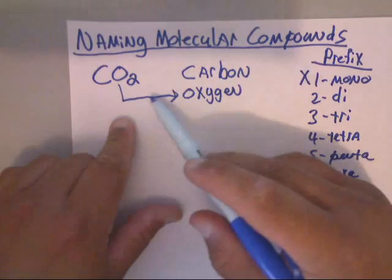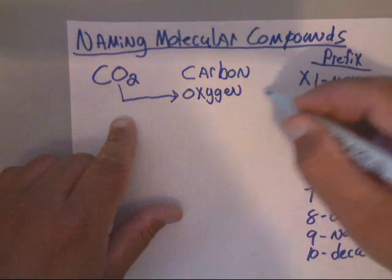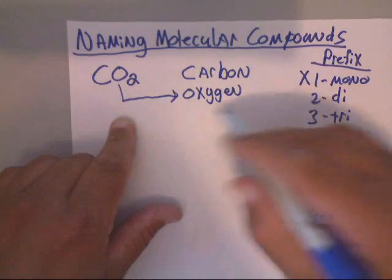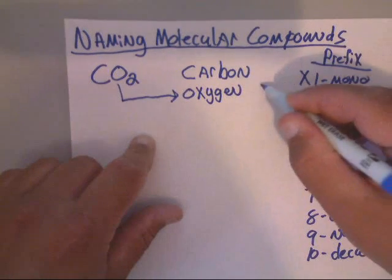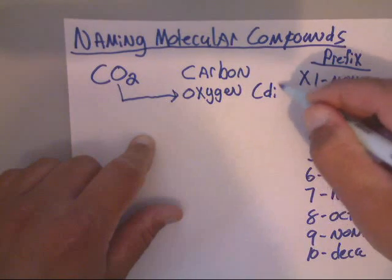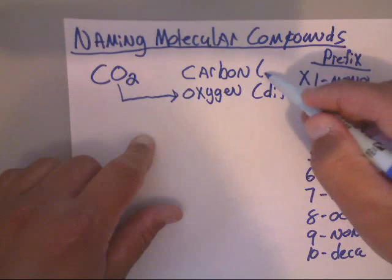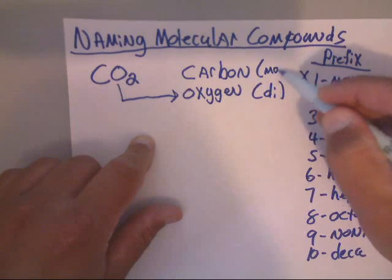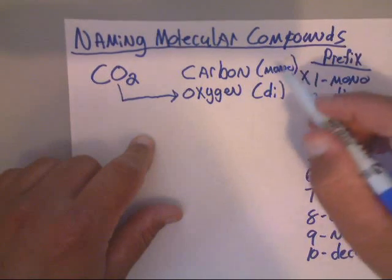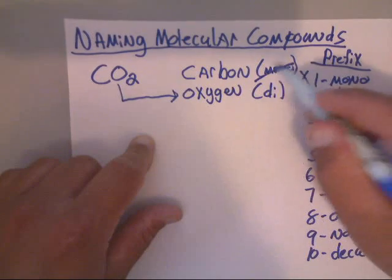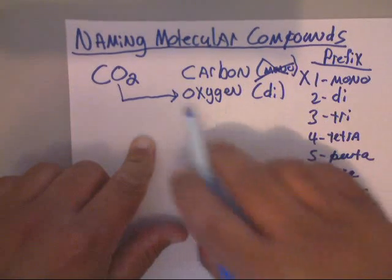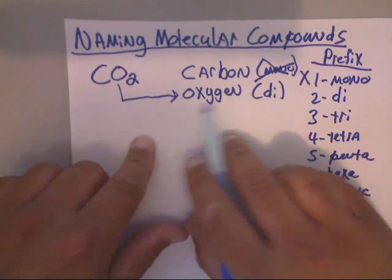For the oxygen, think about how many you have. It's always wise to make a list — you've got two, so that's di. On the carbon, you only have one, so you would use mono, but remember we don't use mono on the first element.